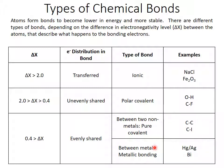On the other hand, if it's between metals, then you have metallic bonding, which we discussed earlier in the semester. All of the valence electrons are shared by all of the atoms involved. Examples of that are pure bismuth or maybe a mercury and silver amalgam.